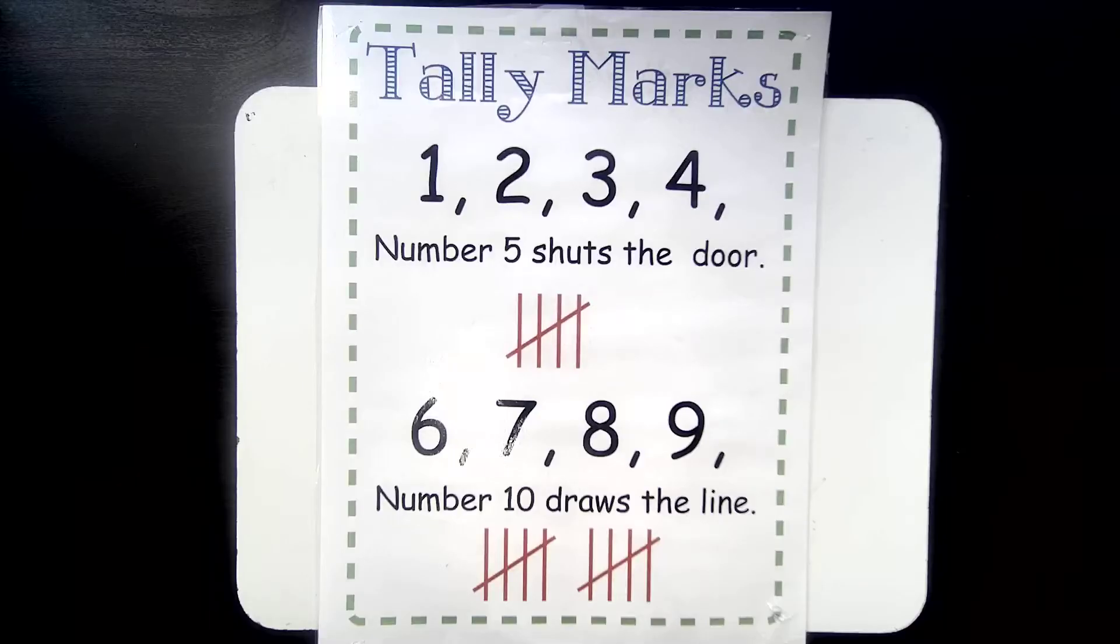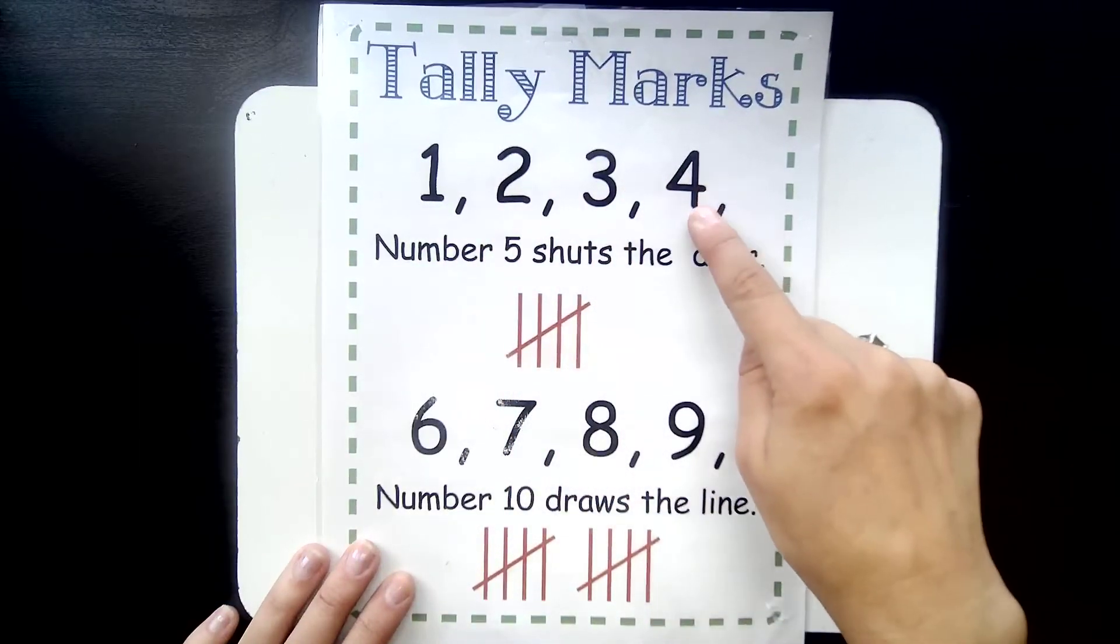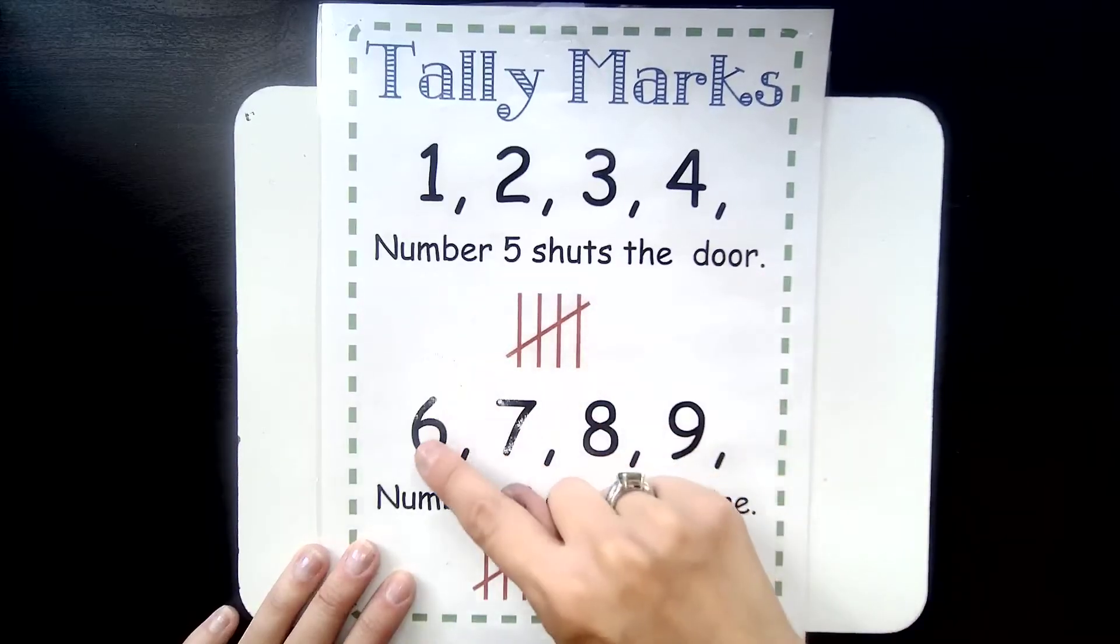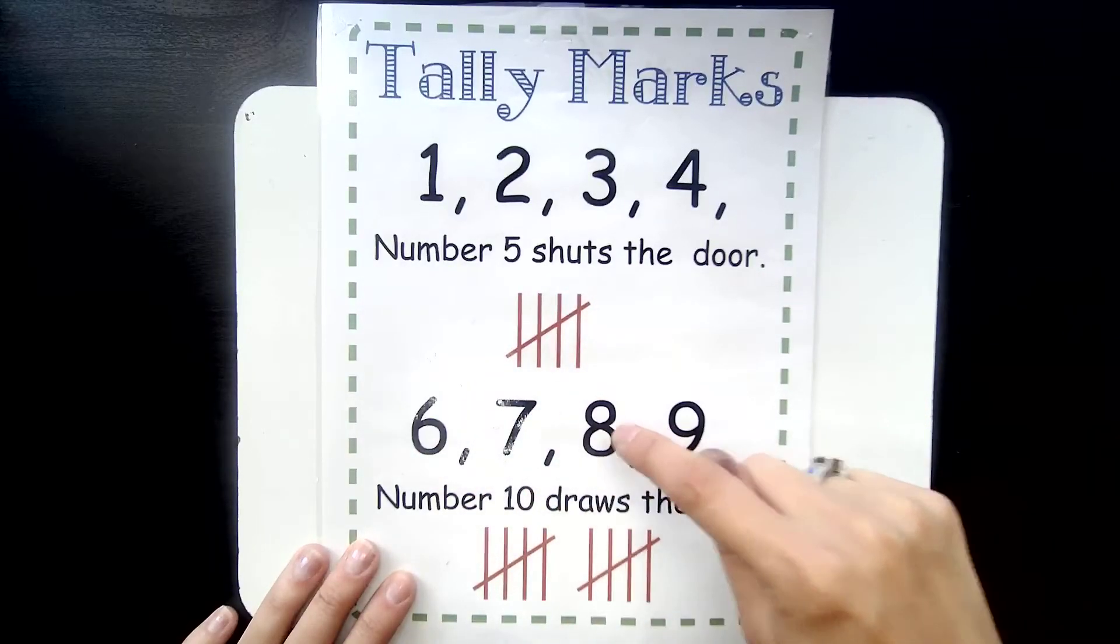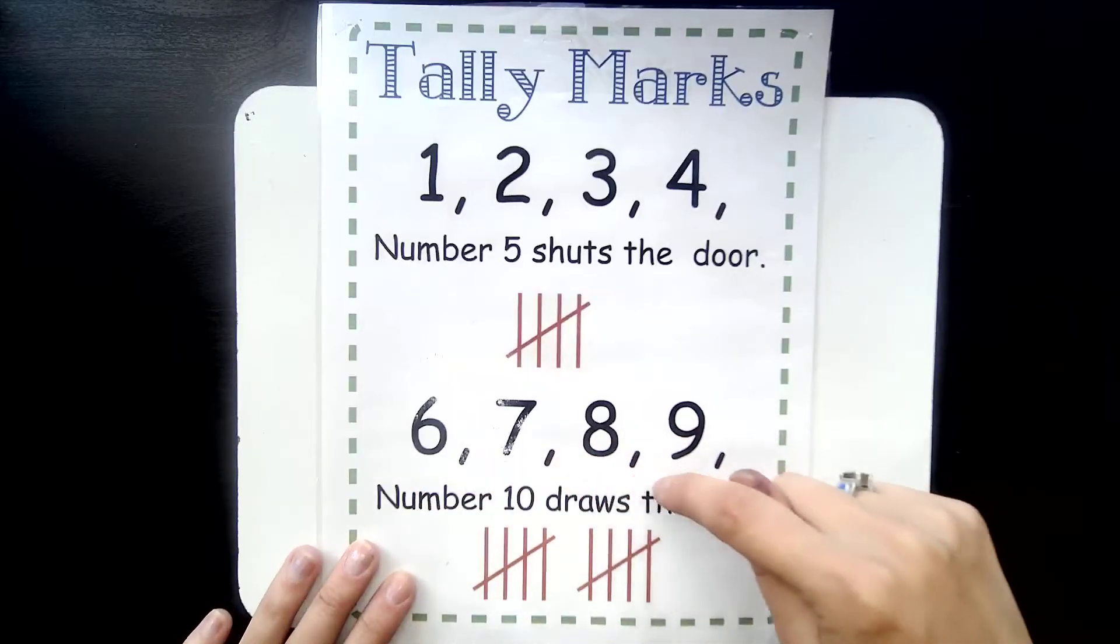So before I show you how to write a tally, there's a little song that we sing that helps us to remember how to do tallies. The song goes like this: One, two, three, four. Number five shuts the door. Six, seven, eight, nine. Number ten draws the line.